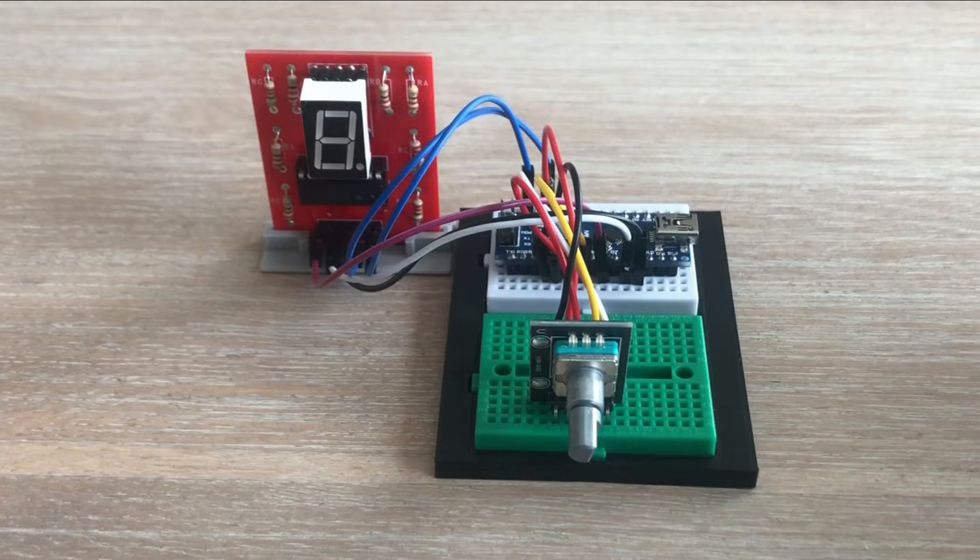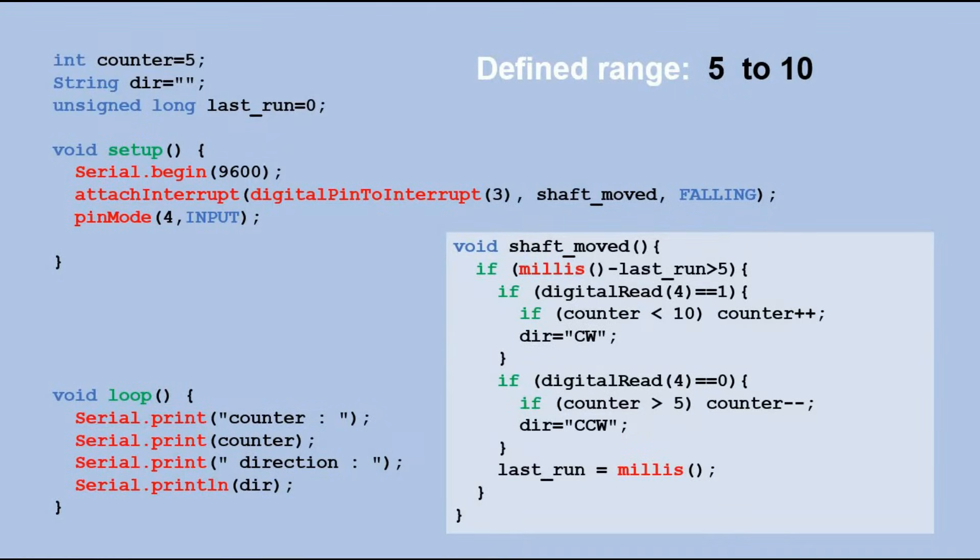With the module connected we can now write the code. We will not write it from scratch but rather adjust the code from the previous example. The range is now from 0 to 9 so we need to adjust the initial counter value to 0 first. Also we need to update range border values in the ISR routine. We'll not use dir variable so let's get rid of this declaration plus the two obsolete lines in the ISR code.